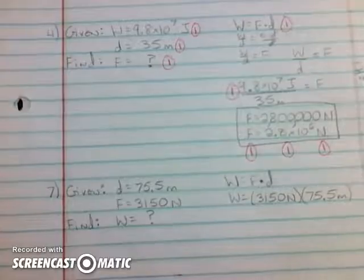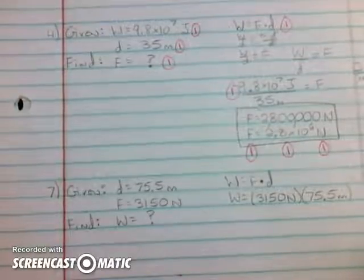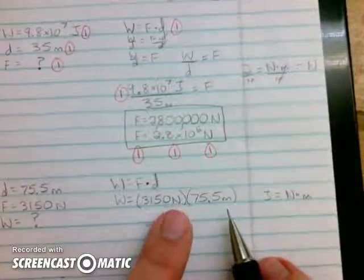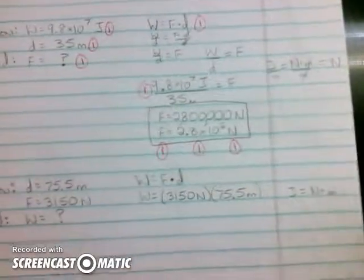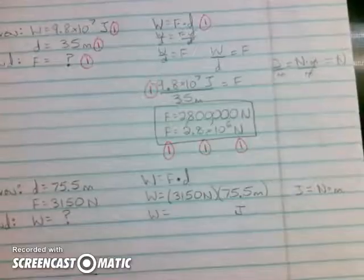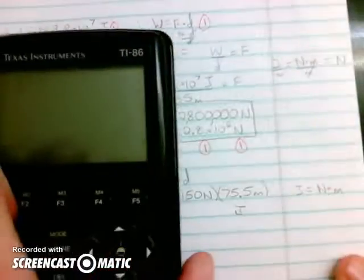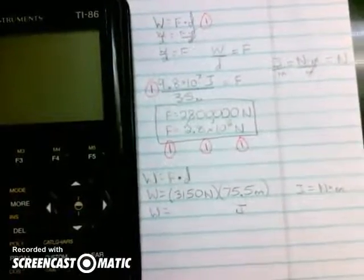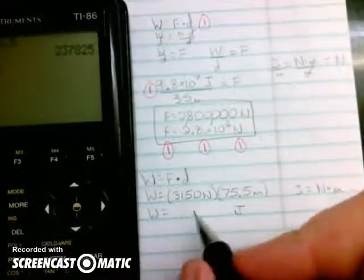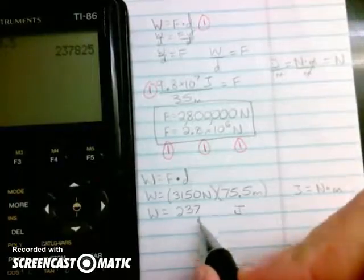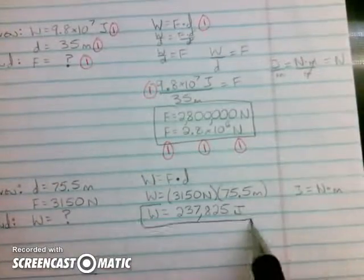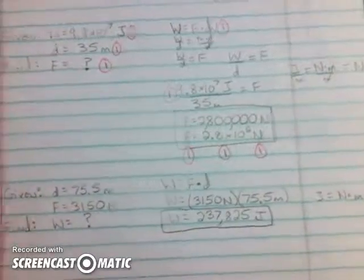Now Newton times a meter - I said earlier that a joule equals a Newton times a meter. So we multiply a Newton times a meter, we're going to get a joule. My unit down here is going to be a joule, which is capital J. Now this is easy. Just type in 3,150 times 75.5 equals 237,825 joules. And again I want you to put a box around your answer.